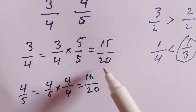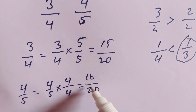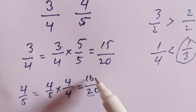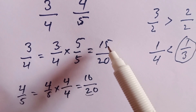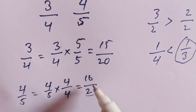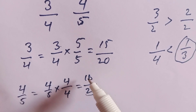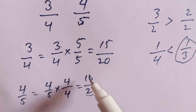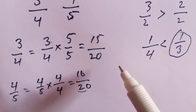We have made both fractions equivalent, meaning both fractions now have the same denominator with different numerators. The numerator here is 16 and here is 15, and the denominators of both fractions are the same. We see that 16 is greater than 15, so the fraction containing 16 is greater.